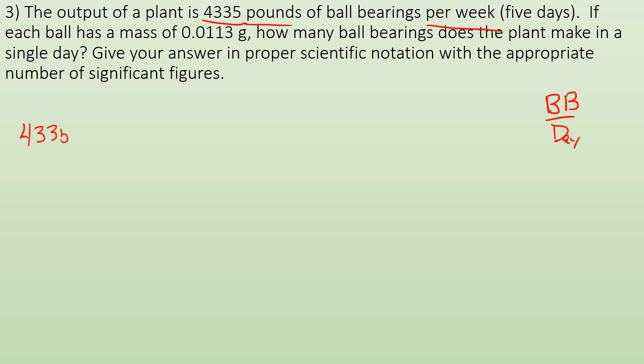I want ball bearings to be on top. So I'm going to have to put the pounds on top. So 4335 pounds per one week. I got the time on the bottom here because I need it to end up with time on the bottom over there. So now I start converting what I can. Well, I know they've defined one week as five days. So to cancel out week, I got to put one week up top and then five days on the bottom cancels out week. Now I got pounds per day.